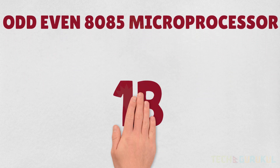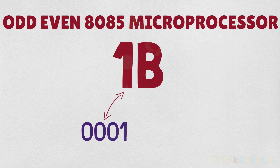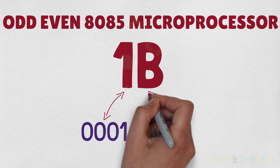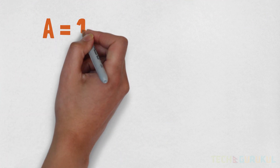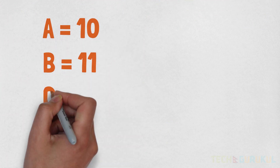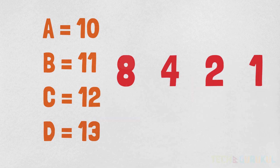First, we are going to find the number 1B. The magic rule we use is the 8, 4, 2, 1 rule.